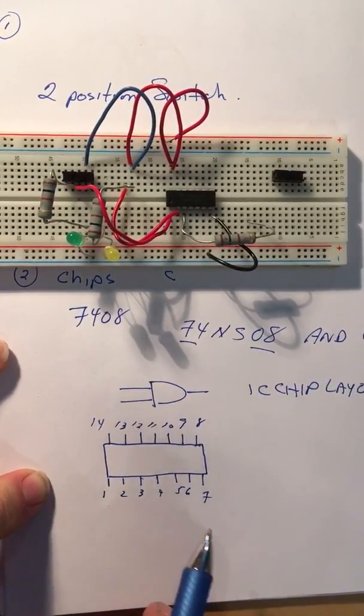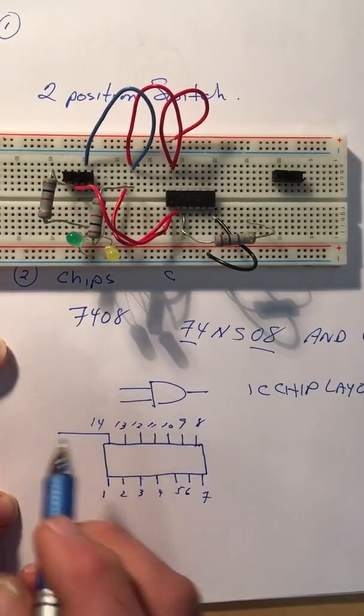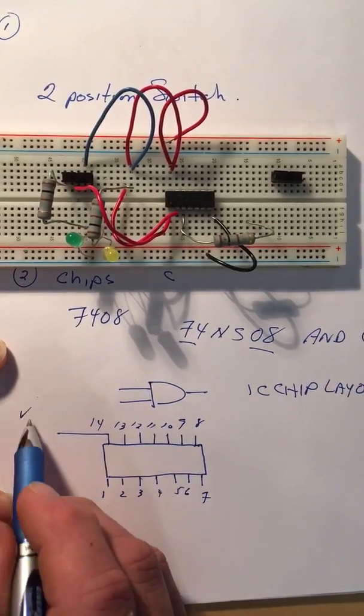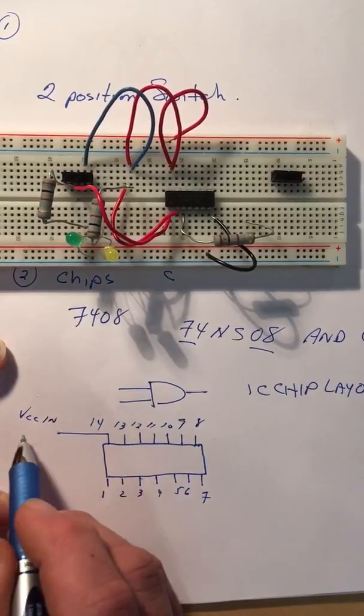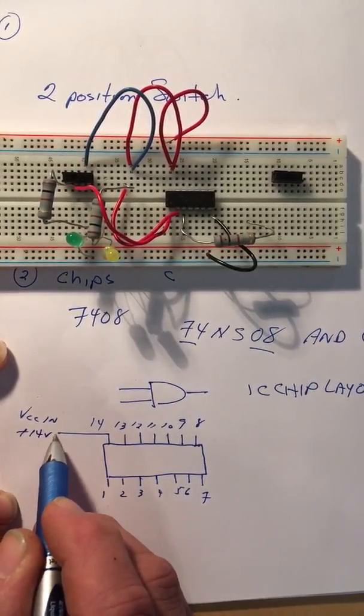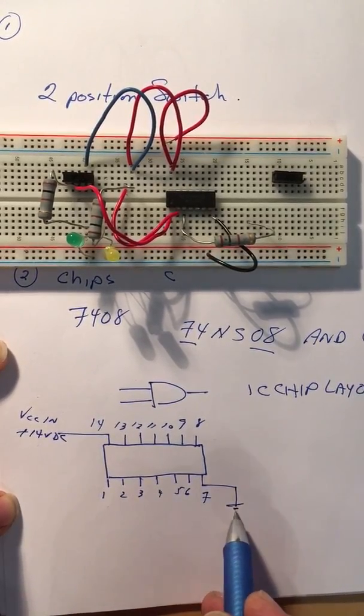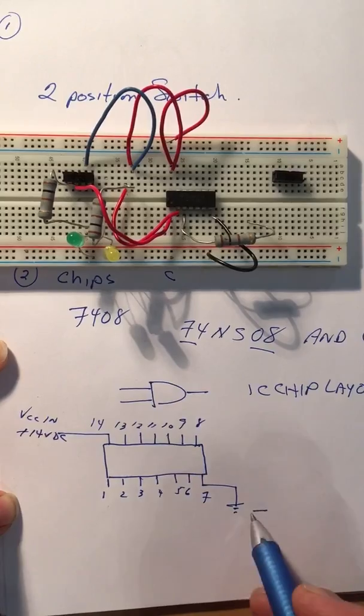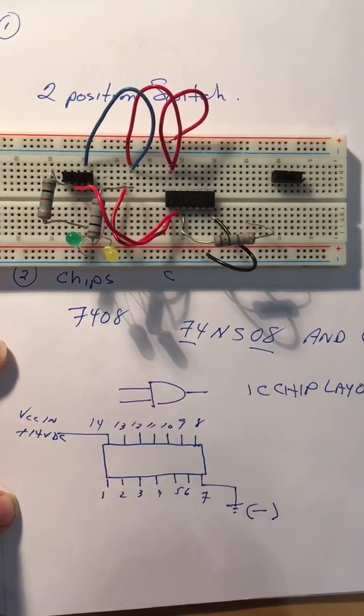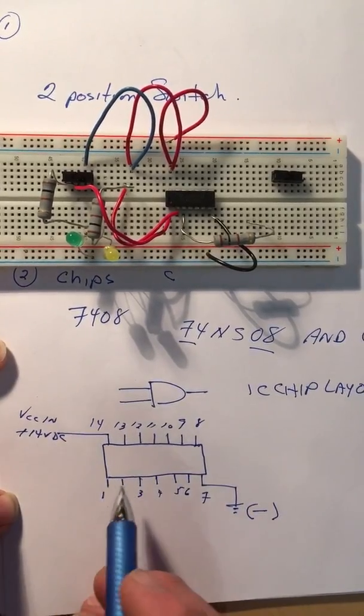Okay, so when you're doing these, these chips need to be powered. And ideally they want to be powered with this one, we'll say VCC in, and ideally it wants to have a positive 14 volts DC on this pin and then this one here needs to go to the ground potential or the negative. And then the chip is powered and then it's going to work.